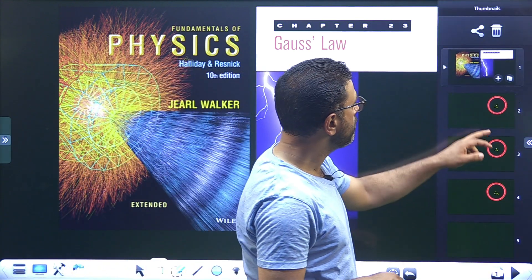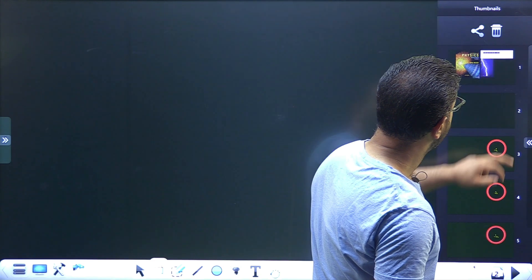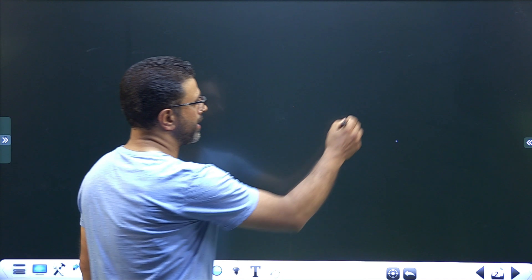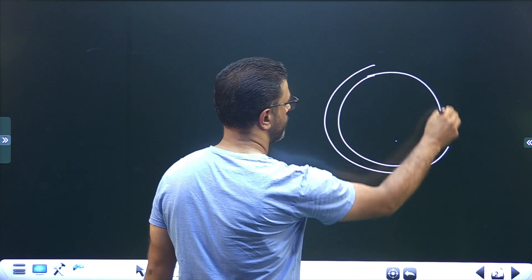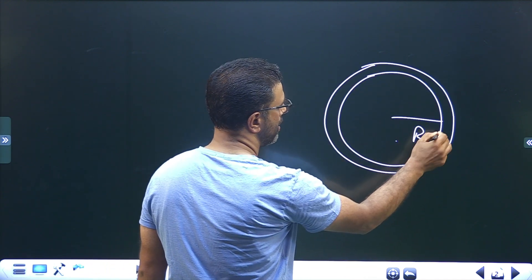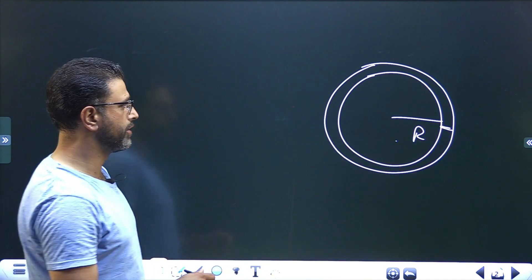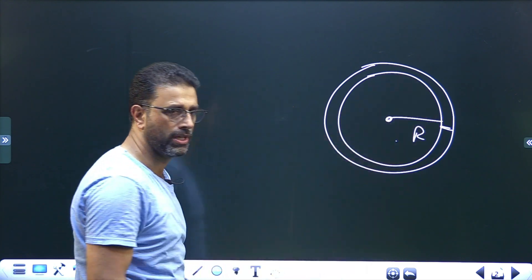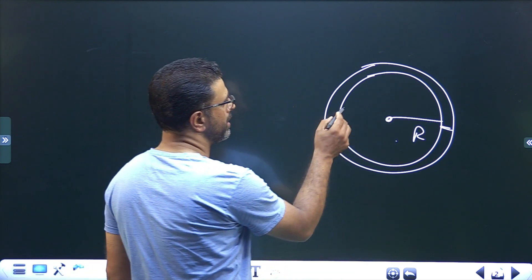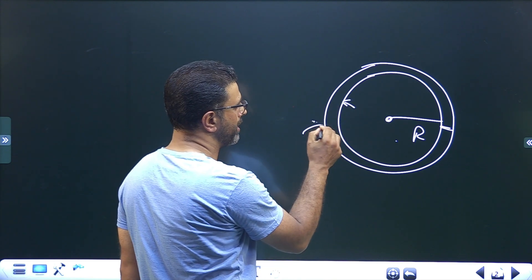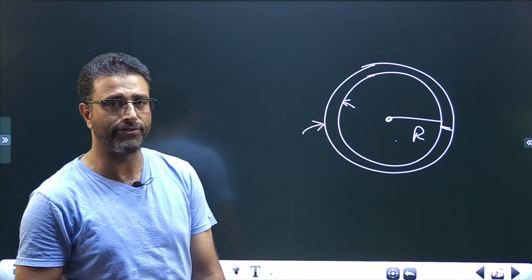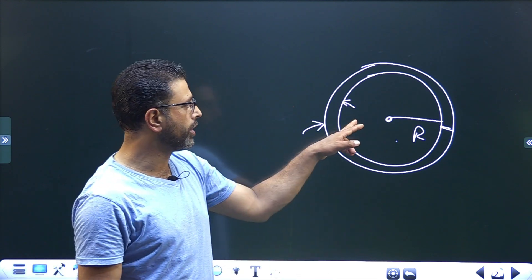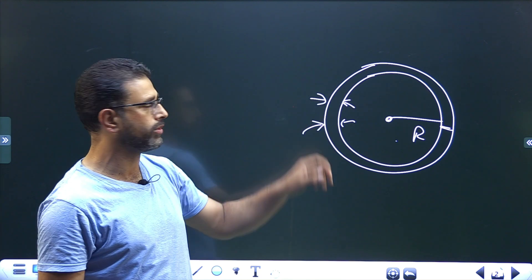What we have here is a conducting spherical shell of radius R, meaning the thickness is very small. Then we have some charge at the center and some charge on the spherical shell. We have to see what the charge on the inner surface of the shell will be and what the charge on the outer surface will be. We are given three situations and have to rank them.